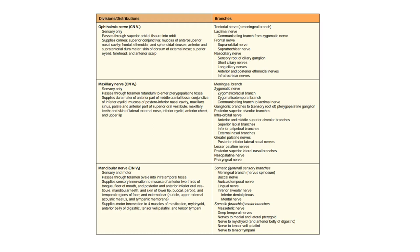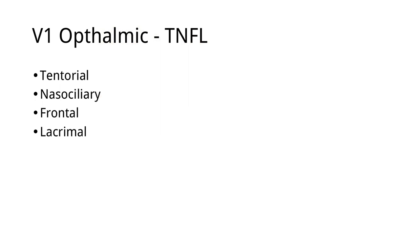Let's begin with the ophthalmic division, V1. I prepared a little something to remember it. You can remember TNFL — or think of the NFL, the National Football League. TNFL stands for the first letters of the branches of the ophthalmic division: T for tentorial, N for nasociliary, F for frontal, and L for lacrimal. Four branches.